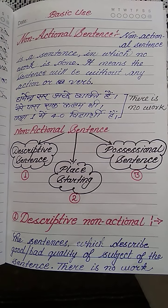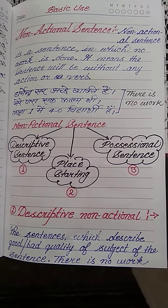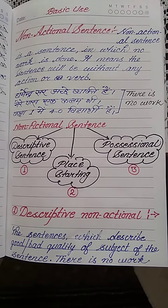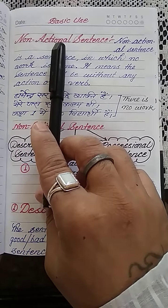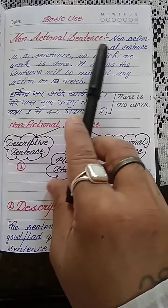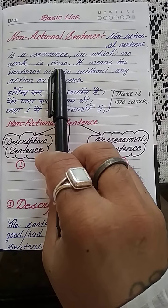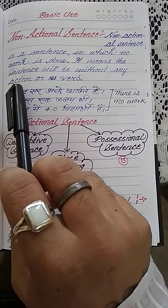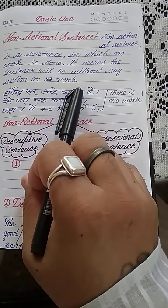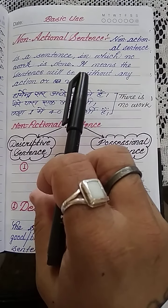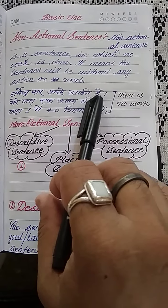Let's start something new today in the series of basic grammar. Today I have brought non-action sentences to you. Let's talk about them — what are they and how do we compose them. Through their name you can come to know: non-action means where we will not find any action or work. A non-action sentence is a sentence in which no work is done — this is why it is called non-action. The sentence will be without any action or work.